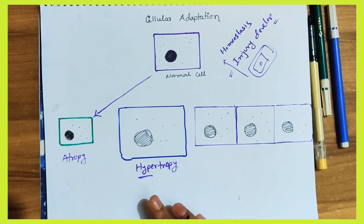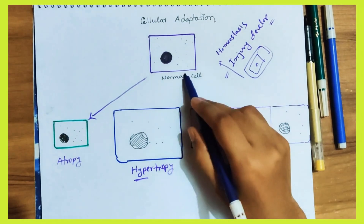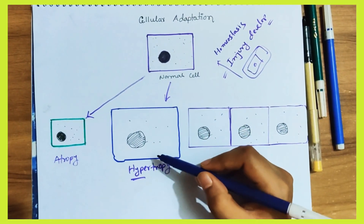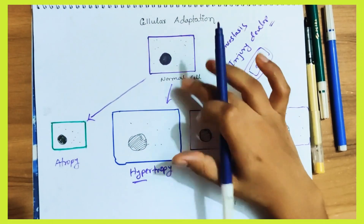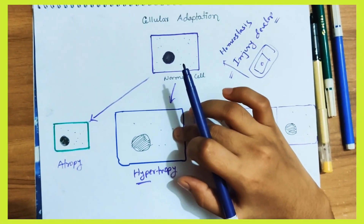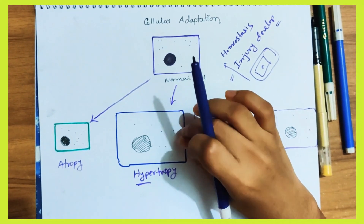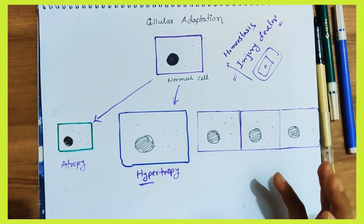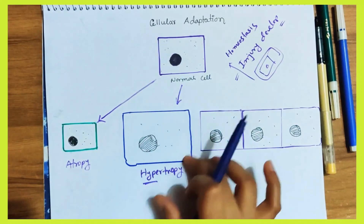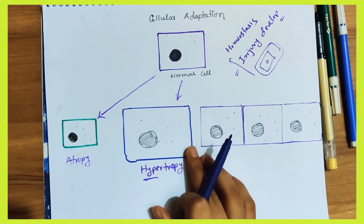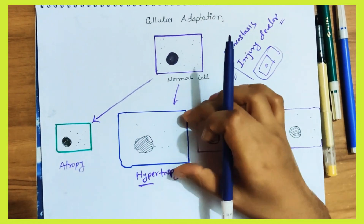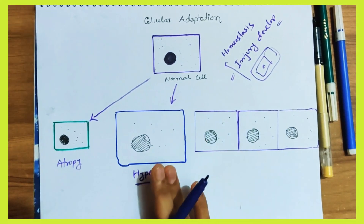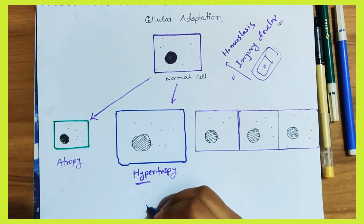Hypertrophy — hyper means large. This is the normal stage of the cell, and hypertrophy means the cell size increases. It is an increase in the size of the cell, which actually results in an increase in the organ size. The affected organ increases in size. However, the number of cells is not increasing.